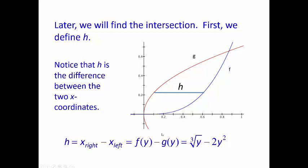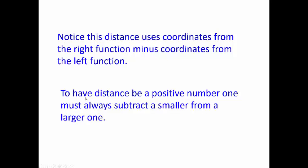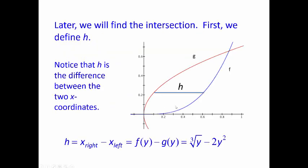The height isn't too bad. But no longer are we using x-values for our bounds of integration — we have to use y. We have one y-value at zero, but what's the y-value at the other intersection? We don't know yet. The distance uses coordinates from the right function minus coordinates from the left function. To have a distance be a positive number, you must always subtract the smaller value from the larger one, which is exactly what we did here.